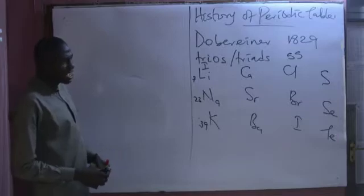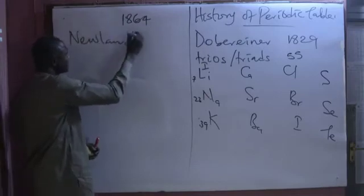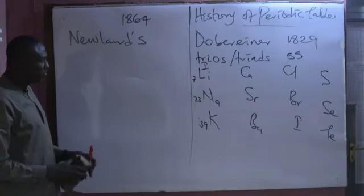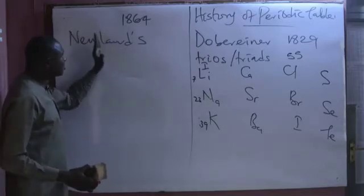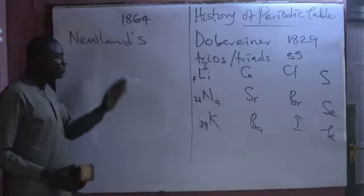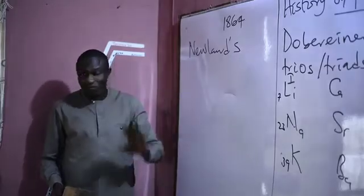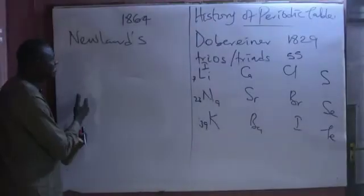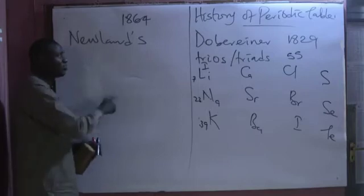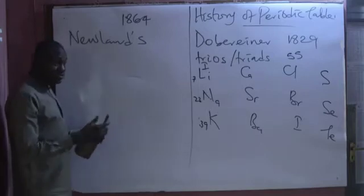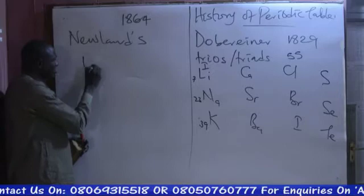After some years, around 1864, we have the Newlands periodic table. Newlands published his periodic table, and as at that time, seven more elements had been discovered, making the total number of elements 62. The Newlands periodic table accommodated all 62 elements, including the transition metals. However, the noble gases or inert gases had not been discovered at that time, meaning elements were arranged in rows of seven — each period consisted of seven elements. And he proposed the Law of Octaves.